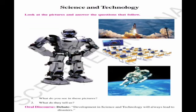Now turn the page, children. What do you see on the face sheet? You see a robot, a rocket, a digital classroom where learning is done with laptops and a digital board, and an astronaut moving in space. After seeing the picture, you are supposed to answer the questions given in the textbook and practice with your friends. The skill of debate: development in science and technology will always lead to disaster. We are going to know something about science and technology and its change with respect to this lesson.